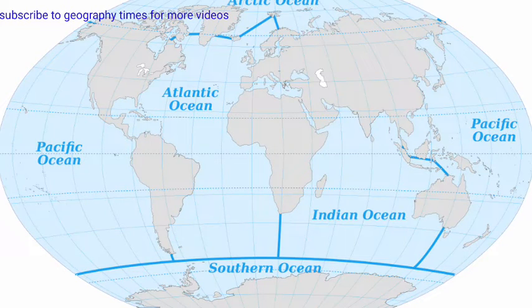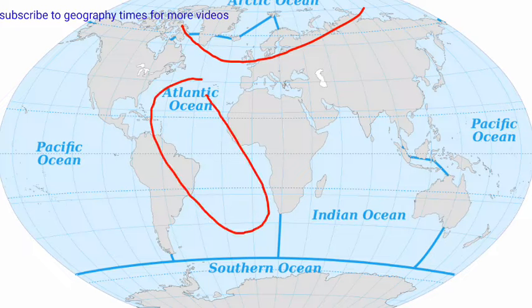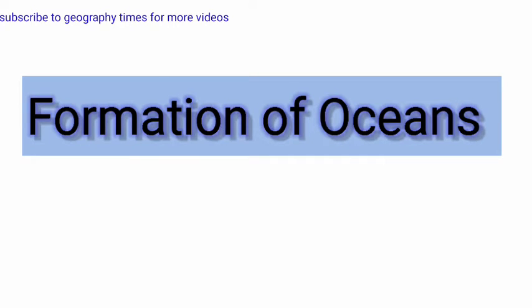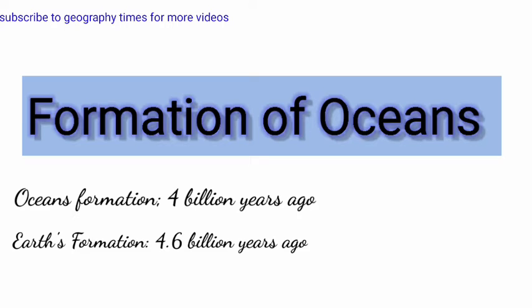The Arctic, Atlantic, Indian, Pacific, and Southern Ocean. The most popular theory behind how Earth got its oceans is that oceans were formed four billion years ago. We all know that our planet Earth was formed about 4.6 billion years ago.